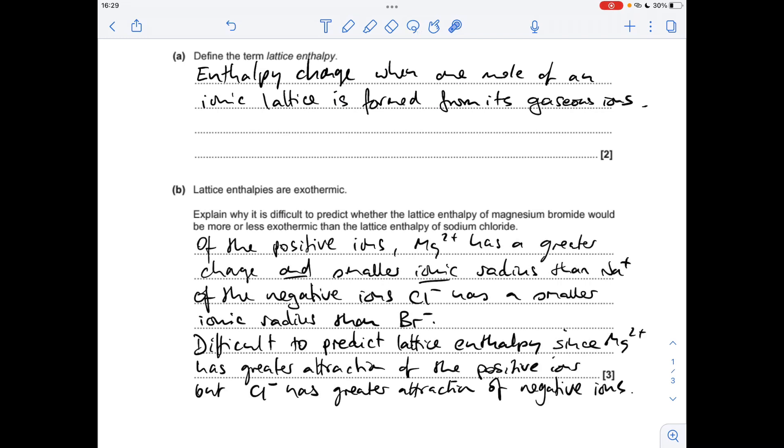Moving on to part B. If we think about the positive ions first in these two compounds, we've got the Mg2+ which has a greater charge and a smaller ionic radius than Na+. Then if we think about the negative ions, the Cl- ion has got the smaller ionic radius than the Br-.